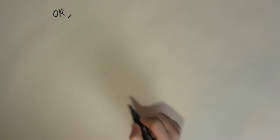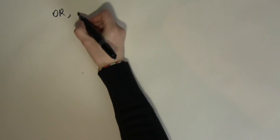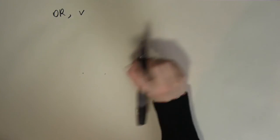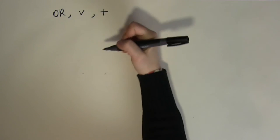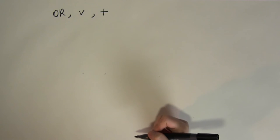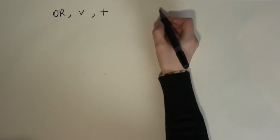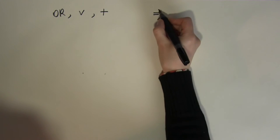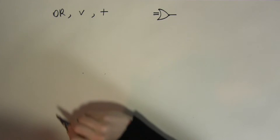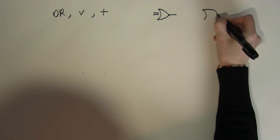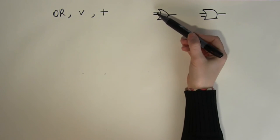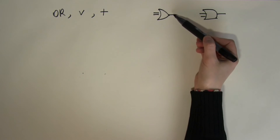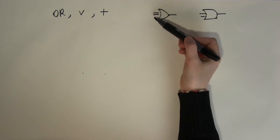The next operation is the OR operator. The symbol for the OR operator can be a small wedge shape — the upside-down of the AND symbol — or the addition symbol, because it works like addition. From an engineering background, you may also see alternative gate symbols for the OR gate. Like the AND gate, it takes at least two incoming values and gives you one outgoing value.